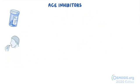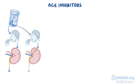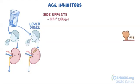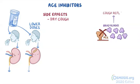Most ACE inhibitors are taken by mouth and they are eliminated by the kidneys, so care must be taken with people that suffer from renal impairment who must receive lower doses. The most common side effect of ACE inhibitors is a dry cough. Normally, ACE also breaks down bradykinin, so when a person takes ACE inhibitors, bradykinins accumulate and are thought to induce the cough reflex.